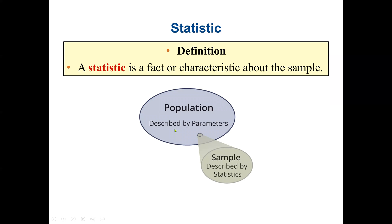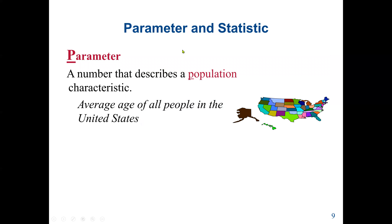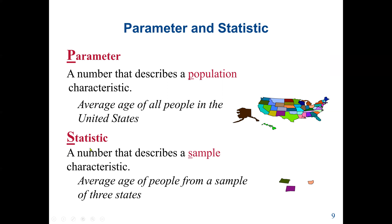So we have a population. Population is described by the parameters. And a sample, which is part of the population, is described by the statistics. So a parameter is the number that describes the population characteristics. Example would be the average age of all people in the U.S. is a parameter because we are talking about everybody in the U.S. Whereas a statistic is a number that describes a sample characteristic. Example would be the average age of people from a sample of three states.